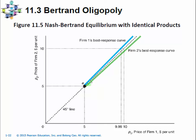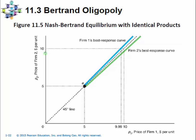In reality, the curves may be much closer. The distance is actually limited by the minimum amount they can cut, which is one cent in this example. So if firm 1 sets its price at $10, according to firm 2's best response curve, firm 2 will set its price at $9.99. If firm 2, on the vertical axis, sets its price at $10, according to firm 1's best response curve, firm 1 will set its own price at $9.99.